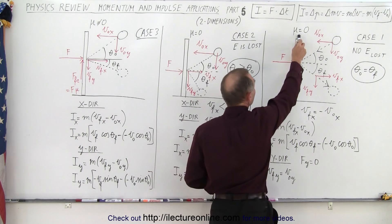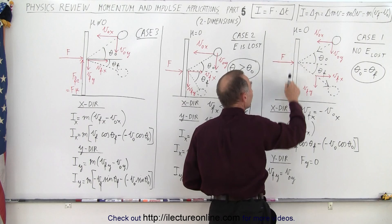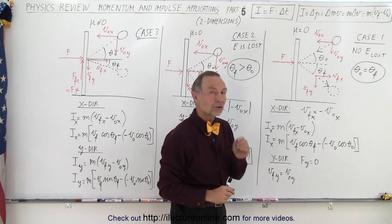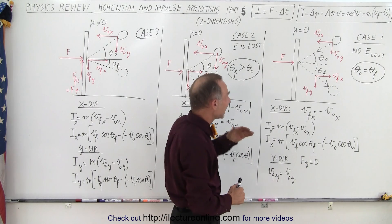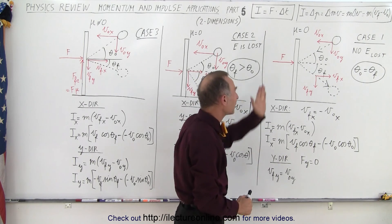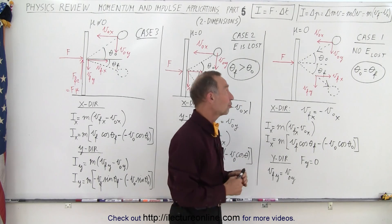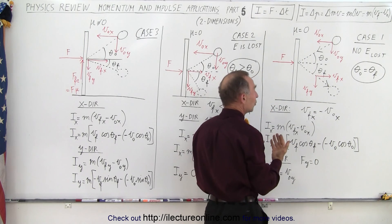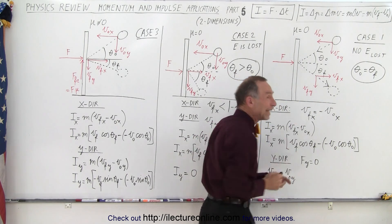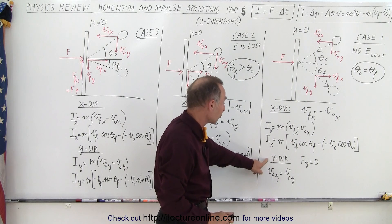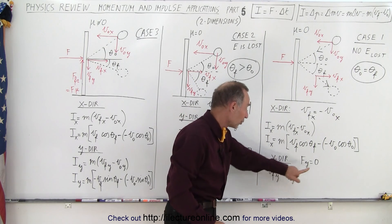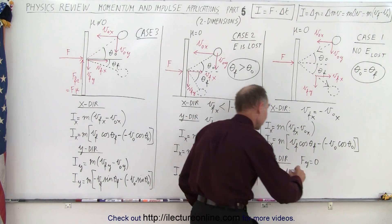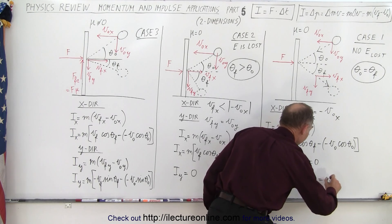Since mu equals zero there's no force in the perpendicular, or vertical, direction — only a force in the horizontal direction. So there can only be a change in velocity in the x direction. There cannot be any change in velocity in the y direction, which means the initial velocity in the y direction must equal the final velocity in the y direction. Therefore there's no impulse in the y direction: no force in y, so the velocity in y is the same before and after, and the impulse in y is zero.